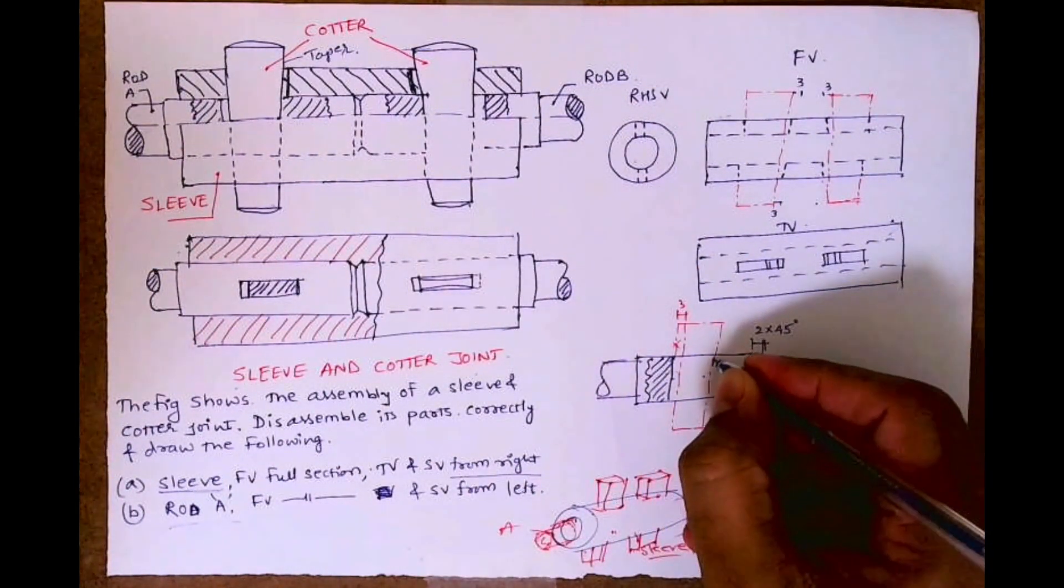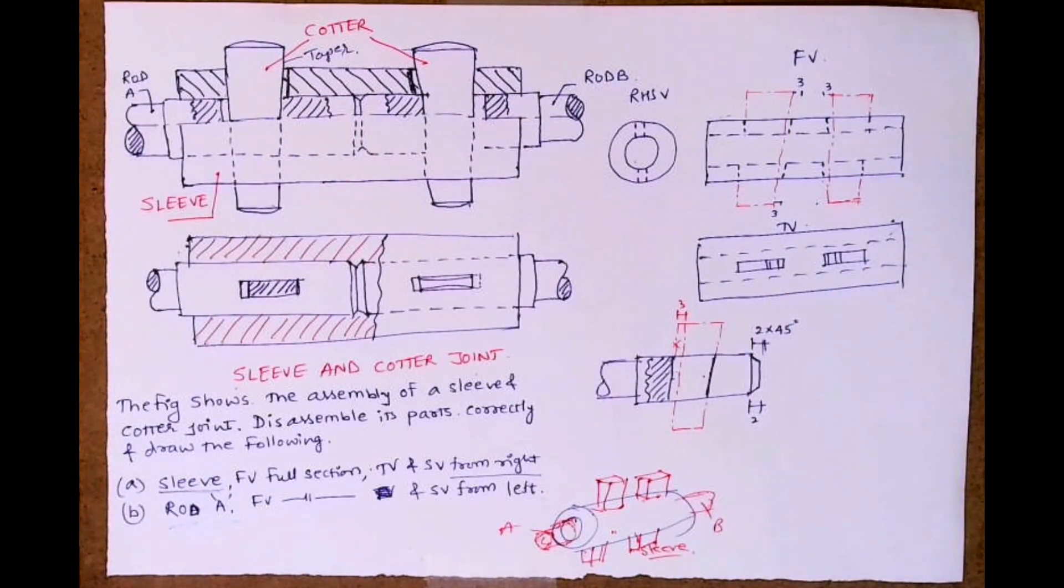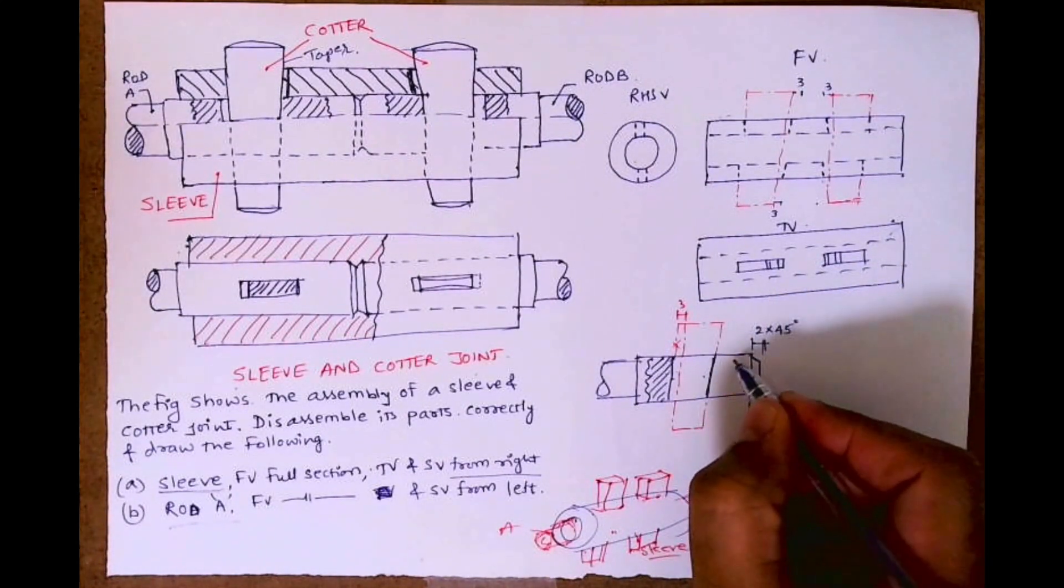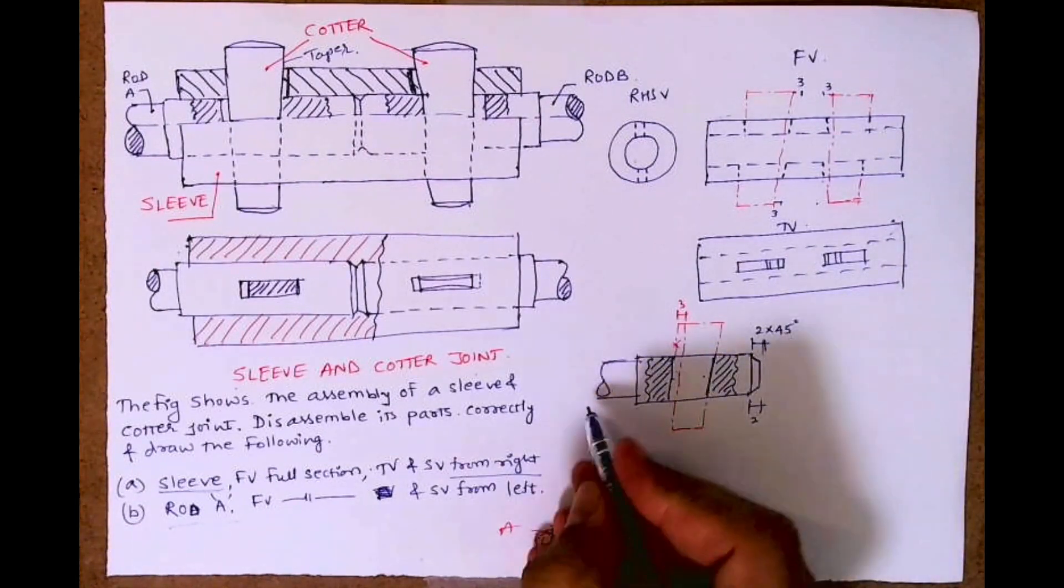So after that, this line, this is a dark line. Remember, this is very important. And this will be hatched. Again partial section, so we are done with front view full section and rod A.